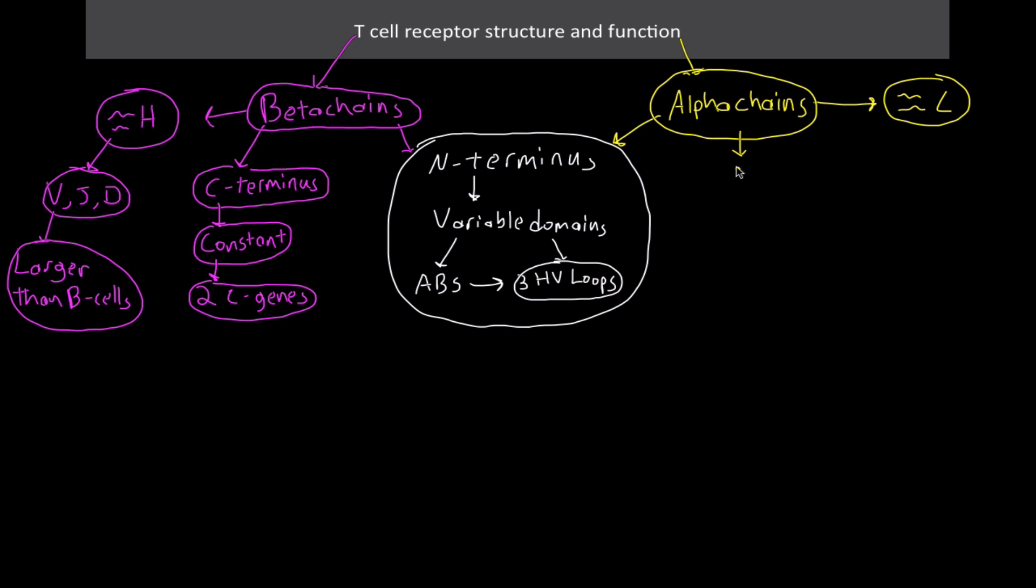Just like with the beta chains, there's the C terminus - remember carboxy, constant, conserved. Since we knew this was homologous to the light chains, there's just the V and J segments for this, and it is larger than that of the B cells.